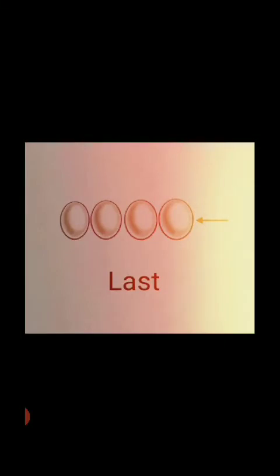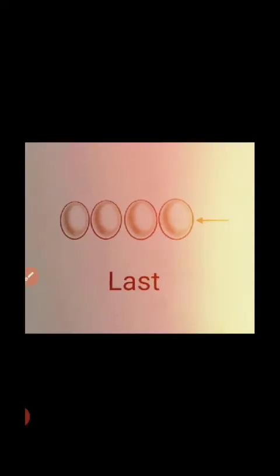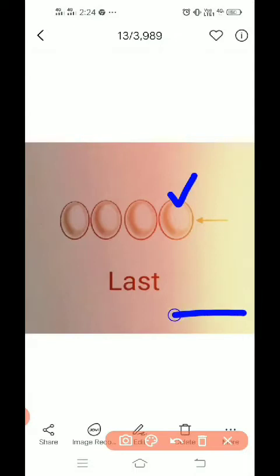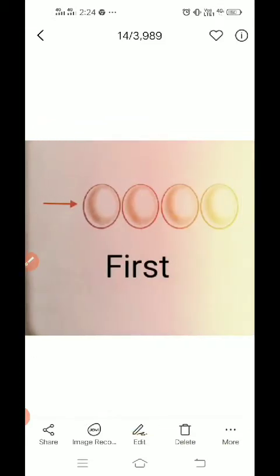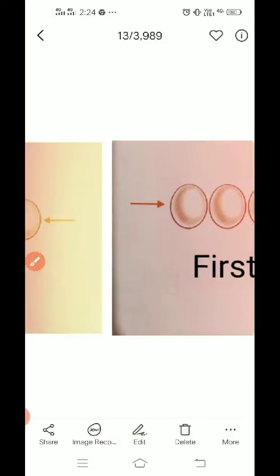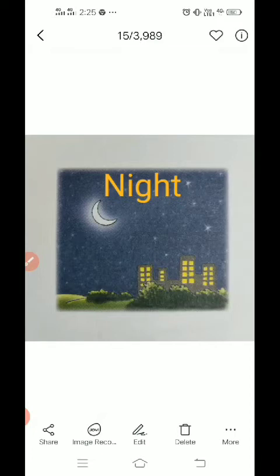Here we have four eggs — one, two, three, four. The arrow points to the last egg, so that one is last — L-A-S-T, last. Now again we have four eggs and this one is the first egg — F-I-R-S-T, first. So this was last and this is first.